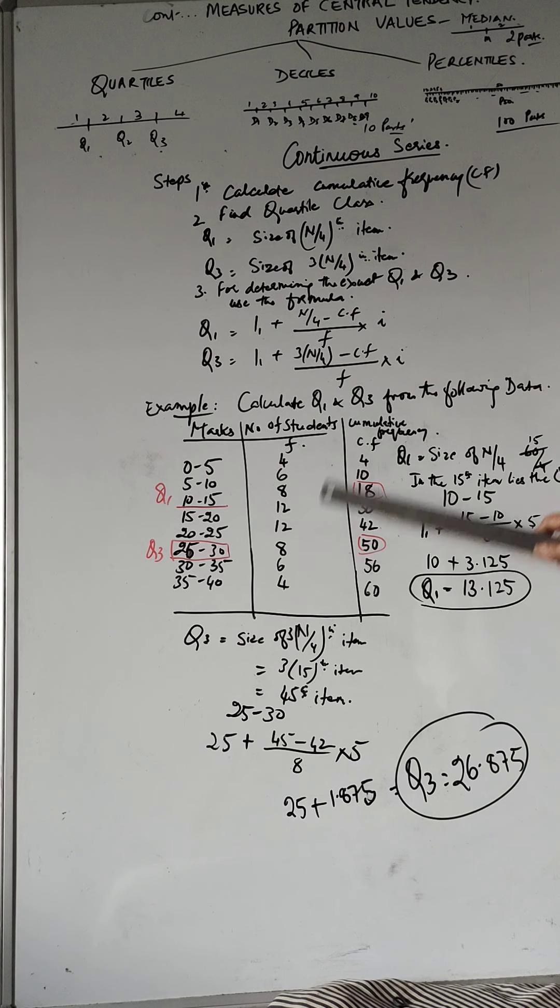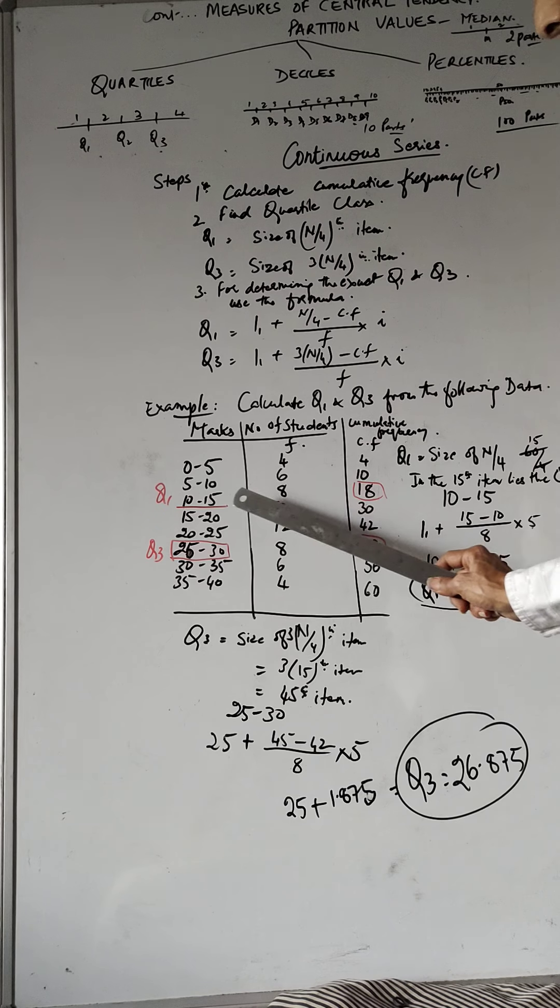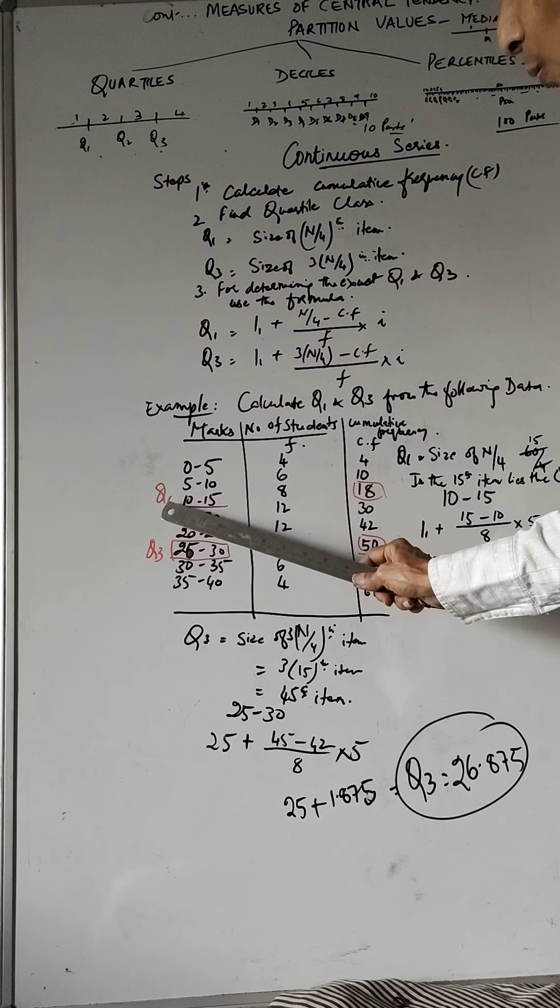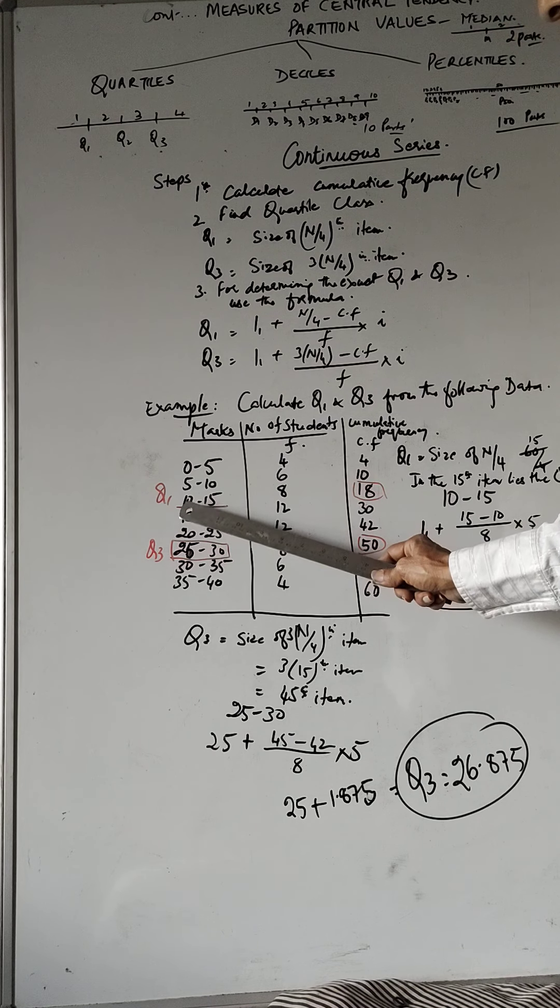So now let's look, don't look here in the frequencies, let's look into the cumulative frequencies. So this 15 that you worked out, 15th item, where does it lie? It lies here in 18 corresponding to that, the quartile 1 will lie between the ranges 10 to 15.